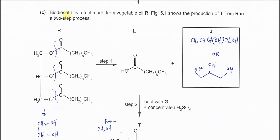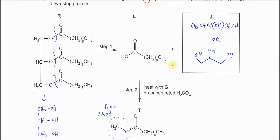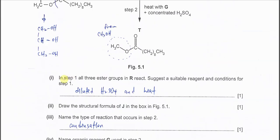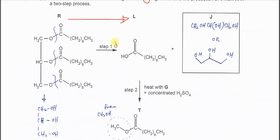Part C. We have biodiesel T. Biodiesel is actually an ester — you can see the three ester groups here — which is made from vegetable oil R. Figure 5.1 shows the production of T from R in a two-step process: R first forms L, then L forms T. In step one, all three ester groups in R react. To go from R to L, the molecule must undergo hydrolysis, so the ester bonds must break.